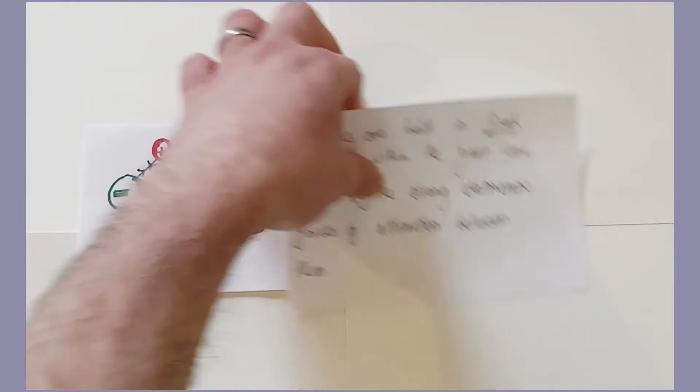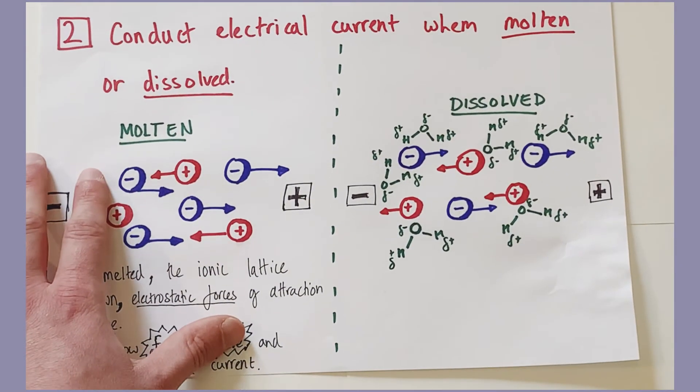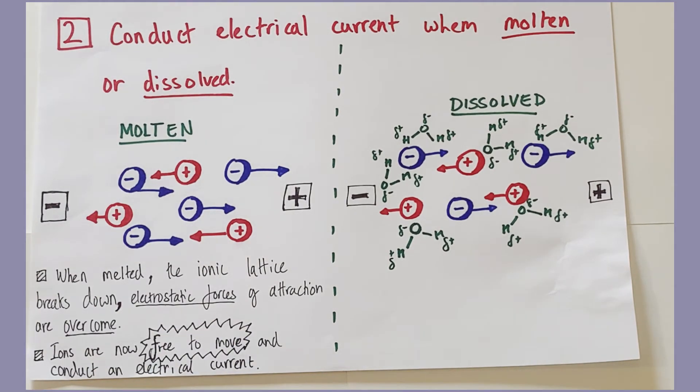But if we do apply enough heat energy to break those strong electrostatic forces of attraction, so when we melt a giant ionic structure, we apply enough heat energy to completely break all of the strong electrostatic forces of attraction between those ions. Then the ions are free to move. If they're free to move, they are free to conduct an electrical current.